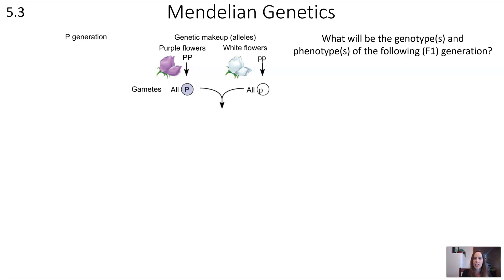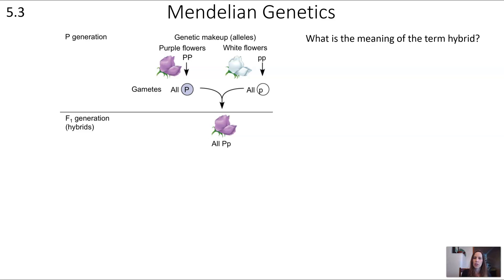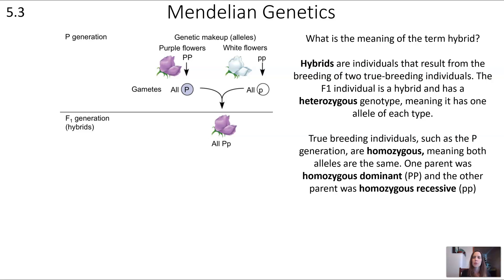What are the genotypes and phenotypes of the next generation, called the F1 generation? The F1 generation will all be purple and all have the genotype Pp. This generation is called hybrid — hybrids result from the breeding of two true-breeding, or homozygous, individuals. The F1 individual is a hybrid with a heterozygous genotype, meaning one allele of each type. True-breeding parents are homozygous: the purple-flowered parent (PP) is homozygous dominant, and the white-flowered parent (pp) is homozygous recessive.